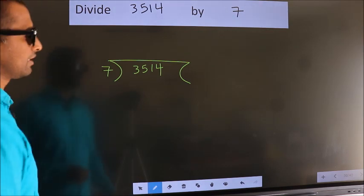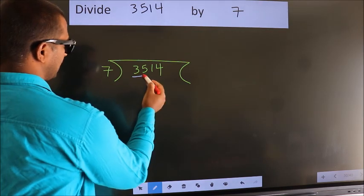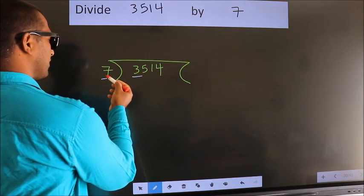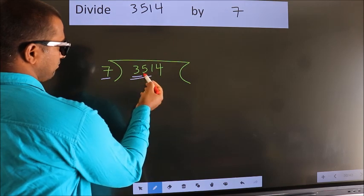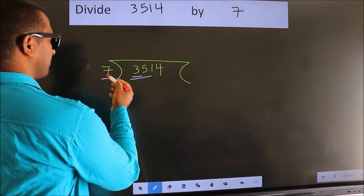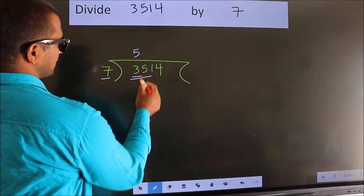Next. Here we have 3. Here 7. 3 smaller than 7. So we should take 2 numbers, 35. When do we get 35? In 7 table. 7 5s 35.